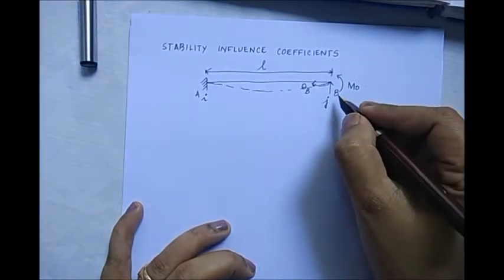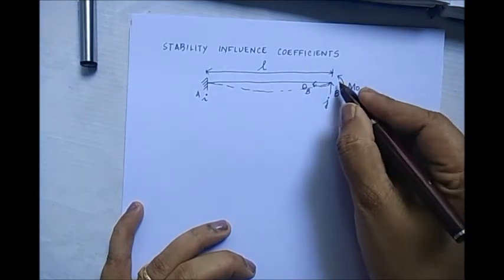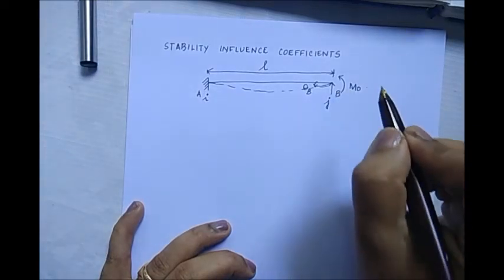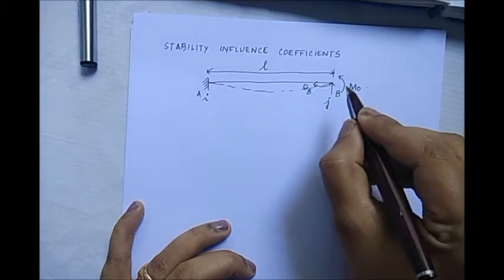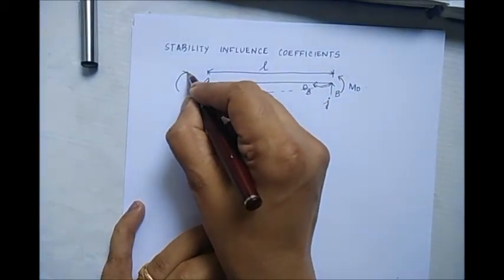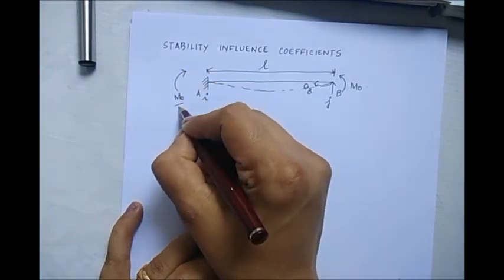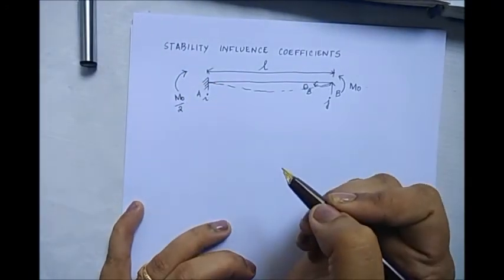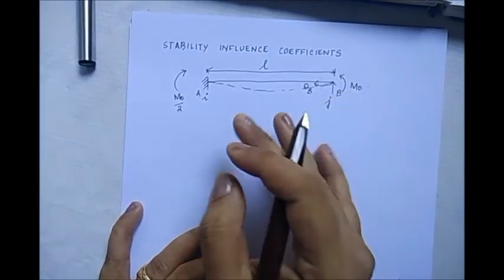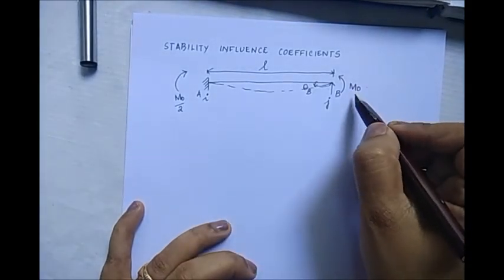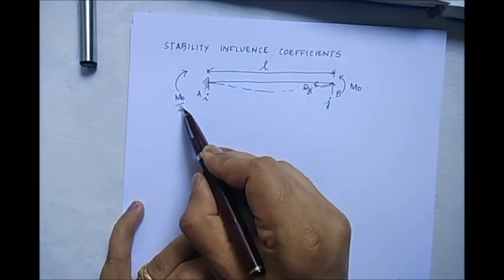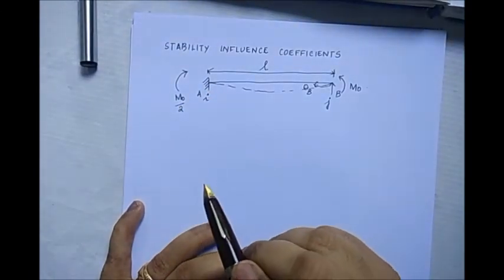When there is a moment induced at point B, at B that is M0, the influence of that is seen at A. At A there will be an induced moment which will be equal to M0 by 2, which is proved in structural mechanics already. We did not have to do the proof for that - that is already proved in structural mechanics. When I give a moment here, there is an induced moment here because of fixidity which is represented by M0 by 2.